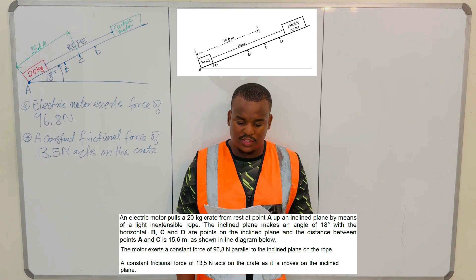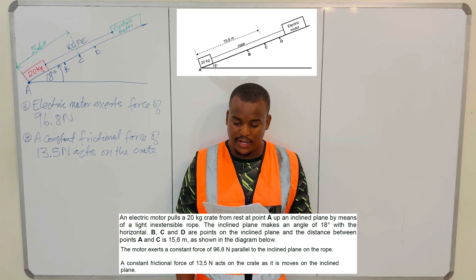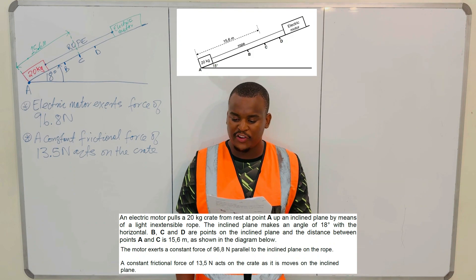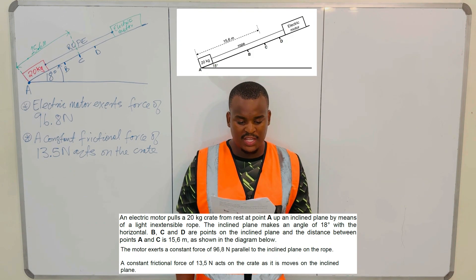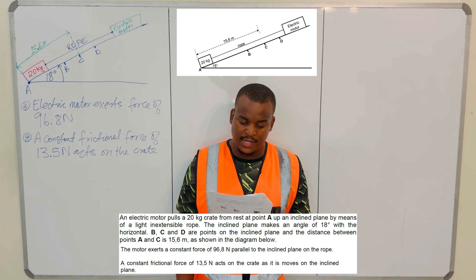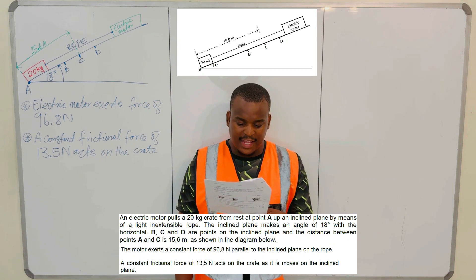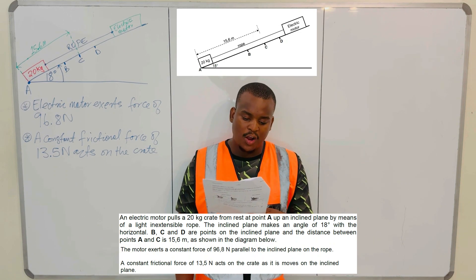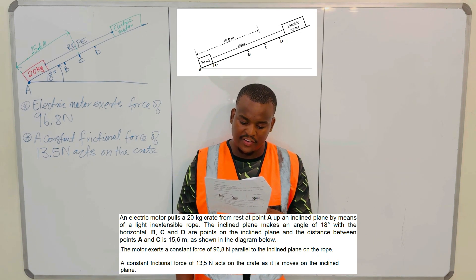They are saying: an electric motor pulls a 20 kg crate from rest at point A up an inclined plane by means of a light and extensible rope. The inclined plane makes an angle of 18 degrees with the horizontal. B, C, and D are points on the inclined plane, and the distance between A and C is 15.6 meters, as shown in the diagram. The motor exerts a constant force of 96.8 newtons parallel to the inclined plane on the rope. A constant frictional force of 13.5 newtons acts on the crate as it moves up the inclined plane.